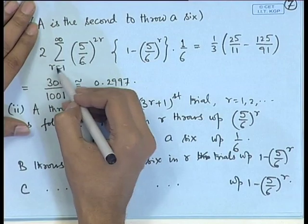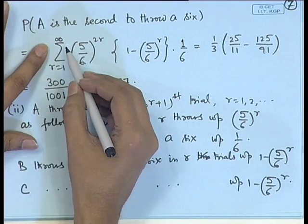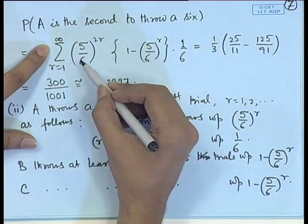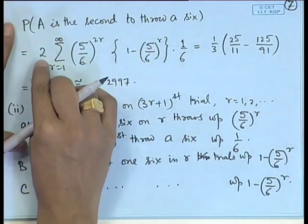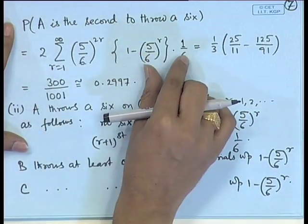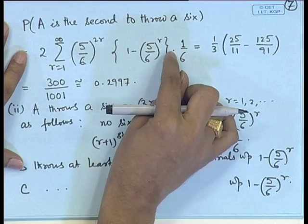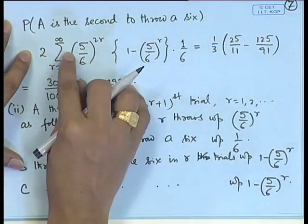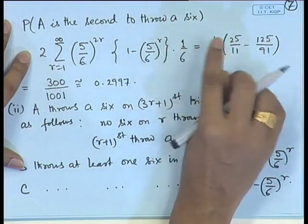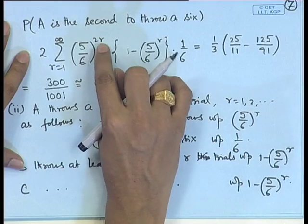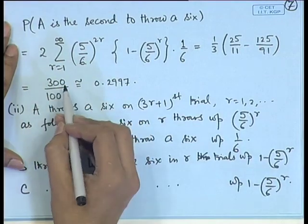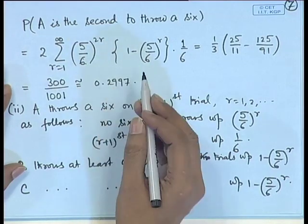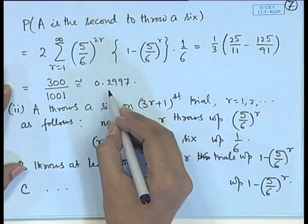Since R ranges from 1 to infinity, and the roles of B and C can be interchanged (doubling the expression), summing over all R gives two infinite geometric series — with ratios (5/6)² and (5/6)³. After simplification, the probability that A is the second player to throw a 6 is 300/1001 ≈ 0.3.